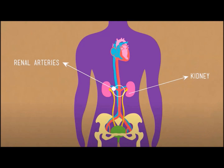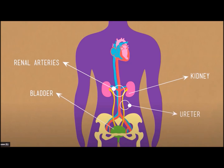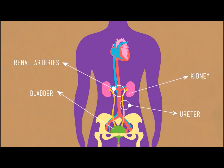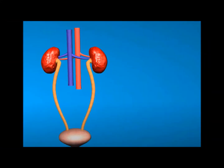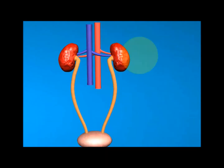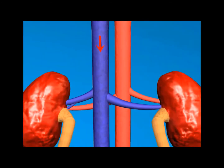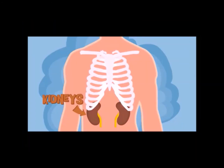The excretory system is a passive biological system that removes excess, unnecessary materials from the body fluids of an organism, so as to help maintain internal chemical homeostasis and prevent damage to the body. Our blood collects waste from all over the body. The renal artery carries blood from the heart to the kidneys; the blood flowing through the renal artery contains nitrogenous wastes, which the kidneys collect and form into urine.